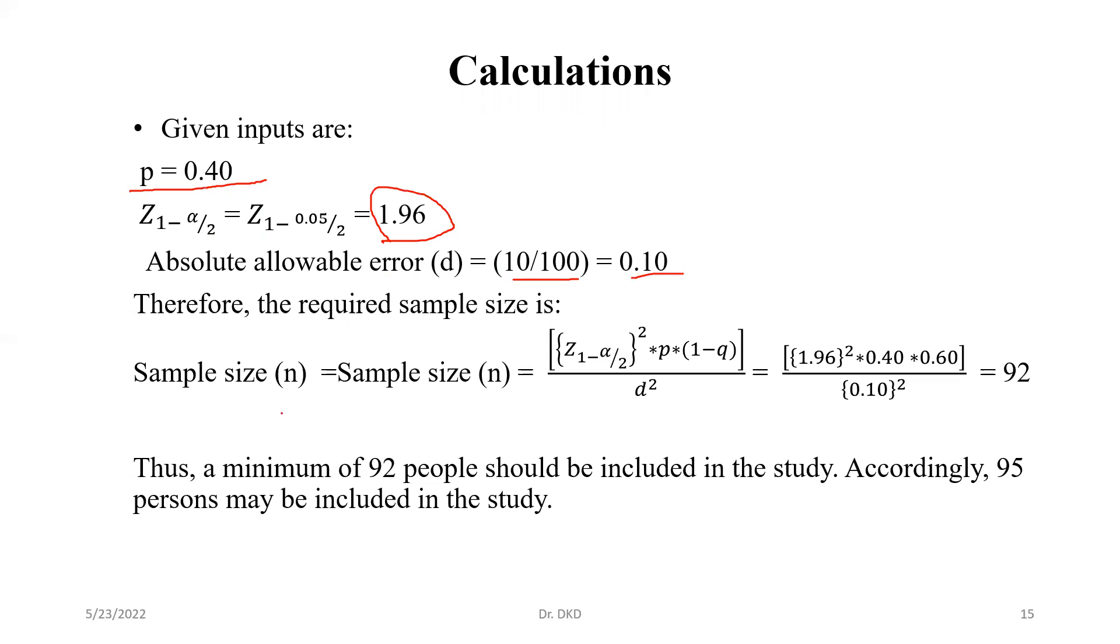For the required sample size, as we know the sample size formula: Z1 minus alpha by 2 squared into P into Q, that is P times 1 minus P, divided by D squared. So we need to just put the values: 1.96 squared, 40 times 60, divided by 0.10 squared, which gives us 92 sample size.